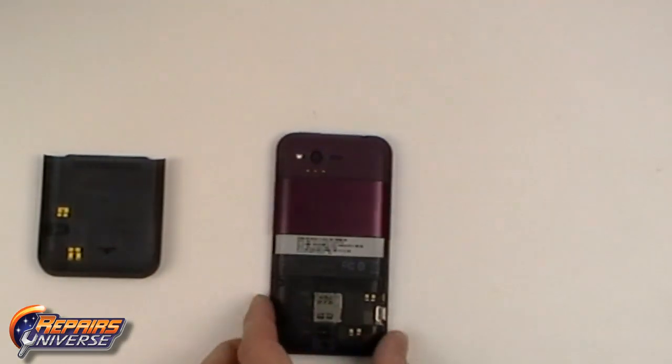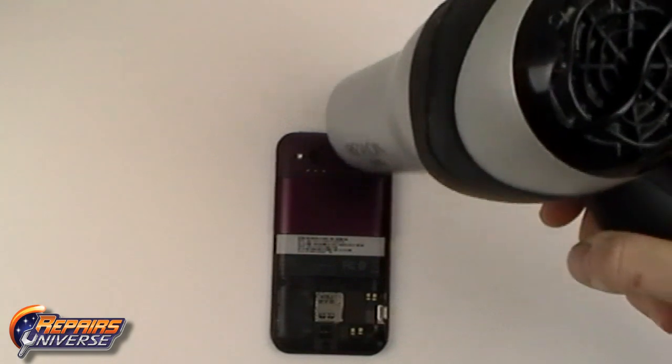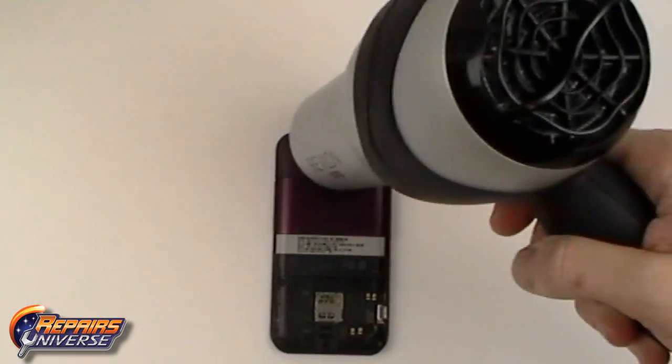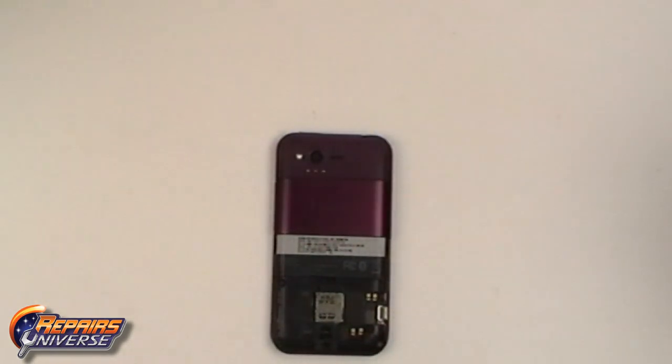From there we can use a hair dryer or a heat gun to gently heat the upper part of the back housing. This will soften the adhesive, allowing the top cover to be removed easier.